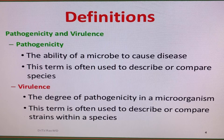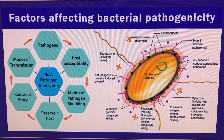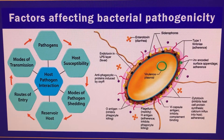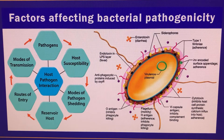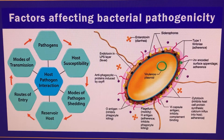Let's take a further look into the factors affecting bacterial pathogenicity. Virulence factors include pathogen type, toxicity, aggressiveness, and transmission host. Properties such as immune fitness and normal pathogen virulence are also relevant.